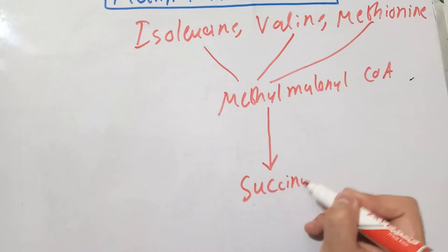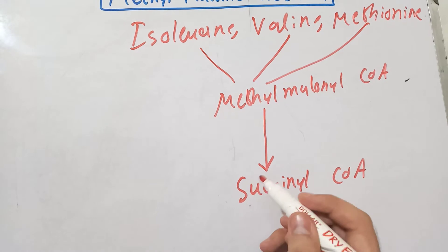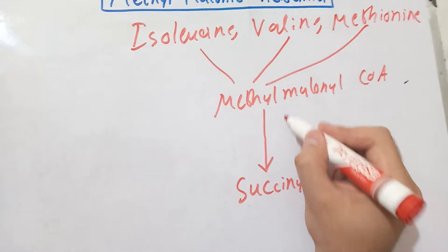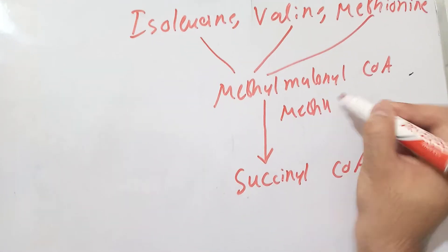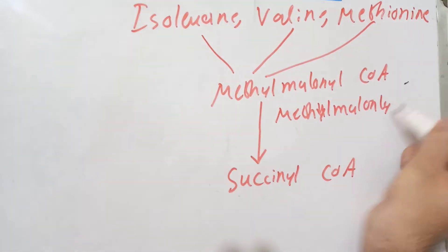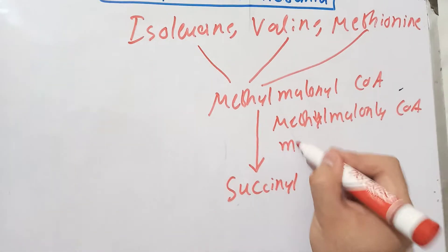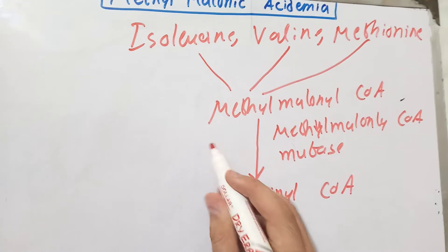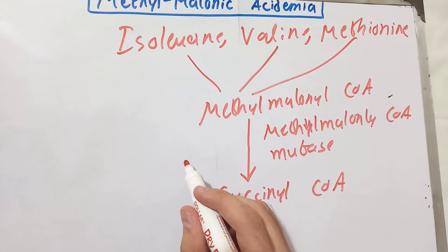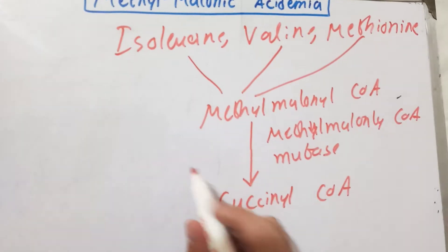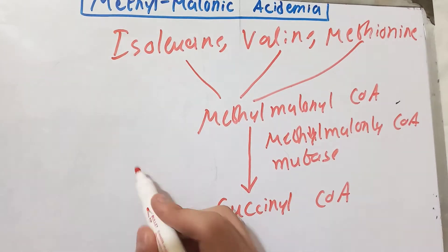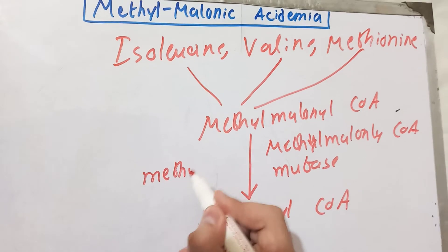Methylmalonyl coenzyme A is normally converted into succinyl coenzyme A by an enzyme called methylmalonyl coenzyme A mutase. This is a reaction that employs vitamin B12 — specifically, it is one of the two reactions occurring in the human body that uses vitamin B12.